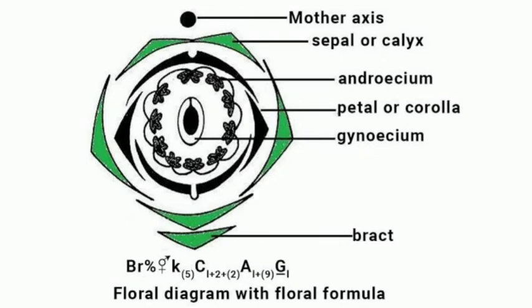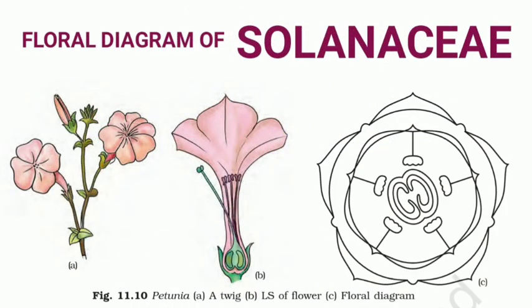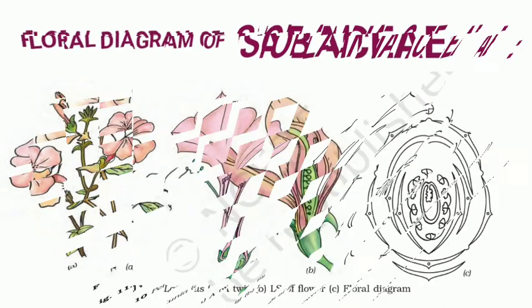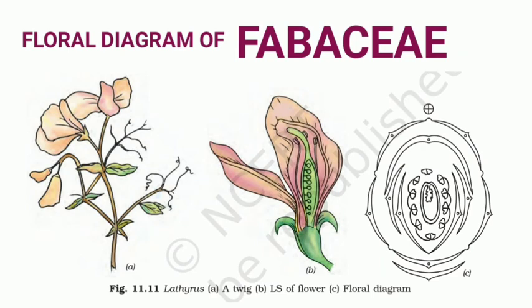Hope you can guess to which family this diagram belongs. This is a floral diagram of the family Fabaceae. We also have an example of the floral diagram of Solanaceae — example, petunia. You can see five sepals, five petals, and five stamens which are epipetalous. The ovary is superior with a bicarpellary pistil. This is the floral diagram of the family Solanaceae.